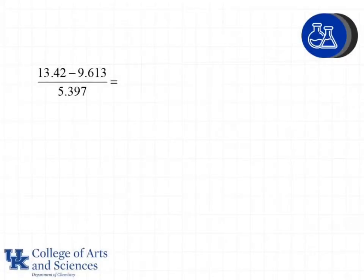The other examples we've seen have involved just addition and subtraction or just multiplication and division. Now we're going to look at how we handle mixed calculations in the same problem. Here is our example: 13.42 minus 9.613, and the result of that divided by 5.397.